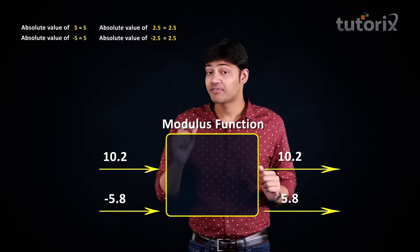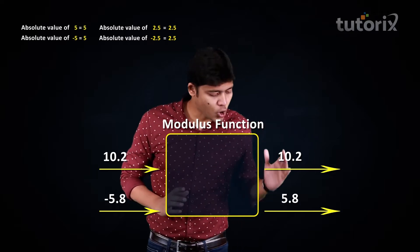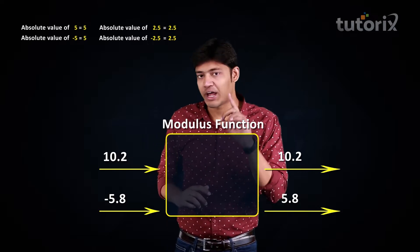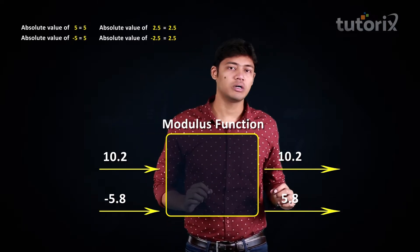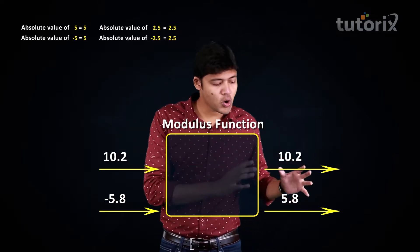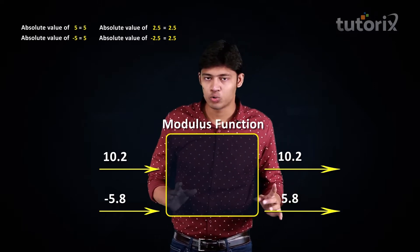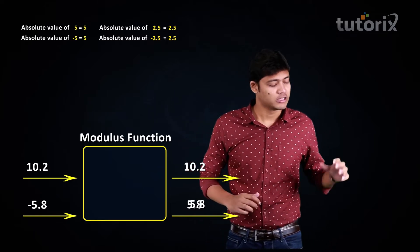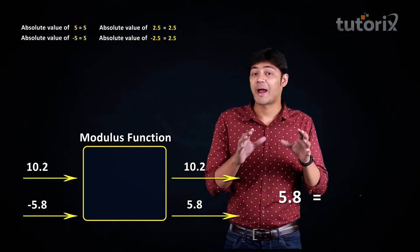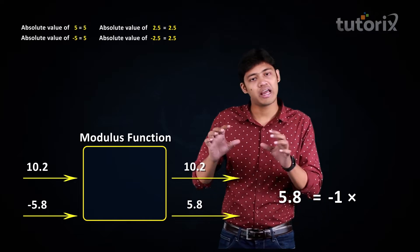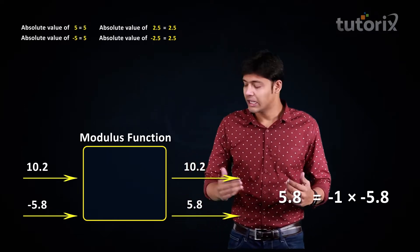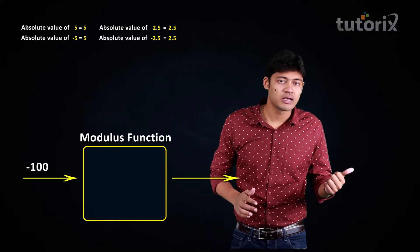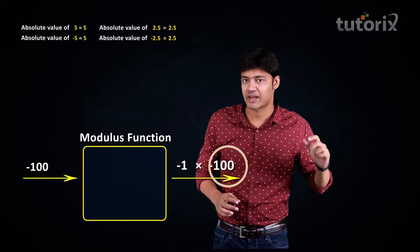Let's analyze the algebra of this function. If the input is a positive number, the output is also the same positive number. But if the input is a negative number, the output is a positive number with the same magnitude — which means the output is minus one multiplied by the input negative number. For example, if the input is minus 100, the output is minus one multiplied by minus 100, which is 100.